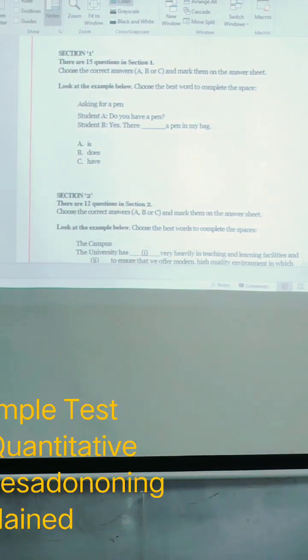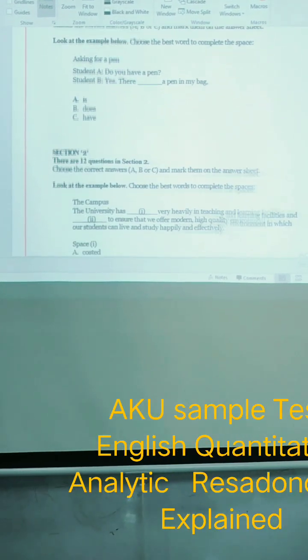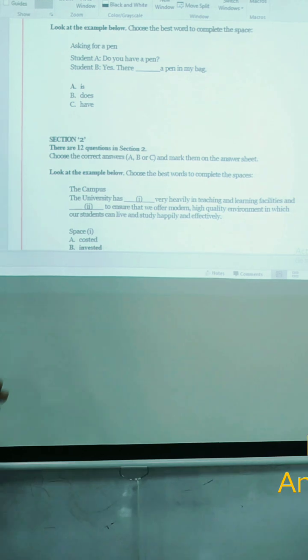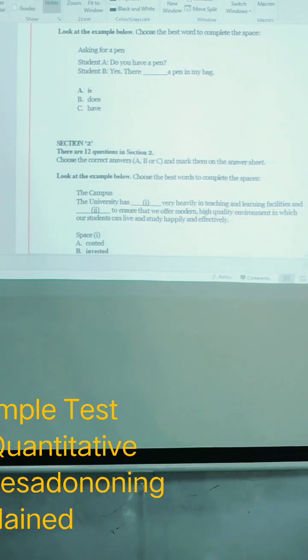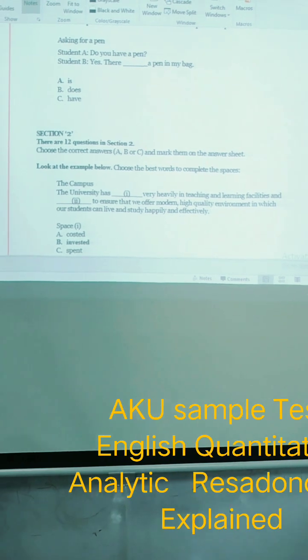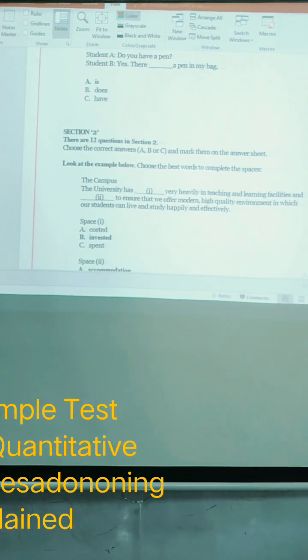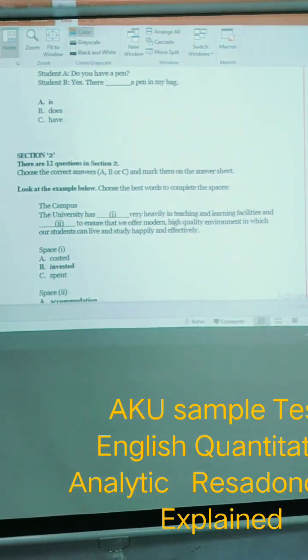Asking for a pen. Student A: Do you have a pen? Student B: Yes, there is a pen in my hand. So what is the correct answer here is A is the correct answer for the example of this section.